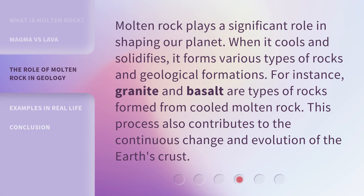Molten rock plays a significant role in shaping our planet. When it cools and solidifies, it forms various types of rocks and geological formations. For instance, granite and basalt are types of rocks formed from cooled molten rock. This process also contributes to the continuous change and evolution of the Earth's crust.